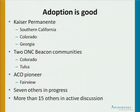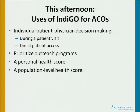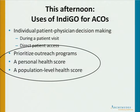Adoption has been very good. It's been picked up by three regions in Kaiser Permanente, two Beacon communities, and an ACO Pioneer. There are seven others already implementing it, and more than 15 others in discussion about adopting it. That changed health outcomes: for every million members, about 1,400 heart attacks and strokes were averted annually, with reduced hospitalization and cost savings on the order of $100 million. This afternoon at the ACO breakout session, I'll be talking about the other applications — prioritizing outreach programs, developing a personal health score, and developing a population-level health score. Thank you very much.